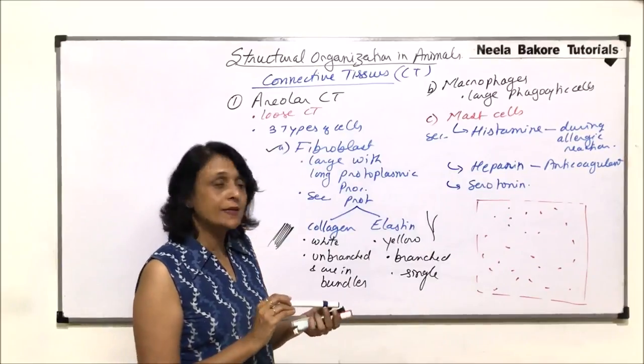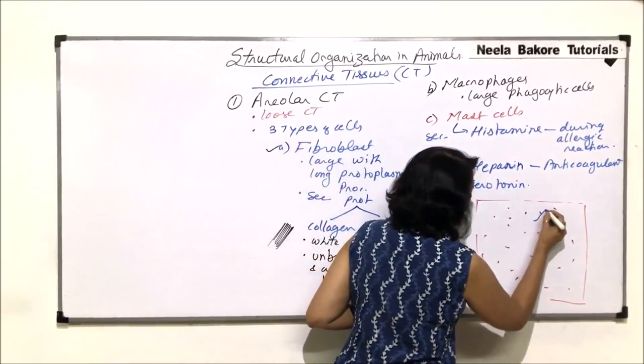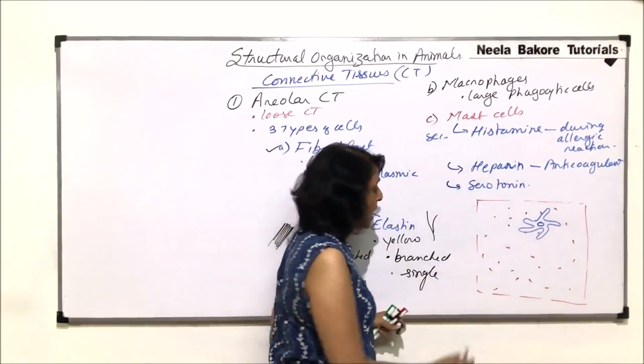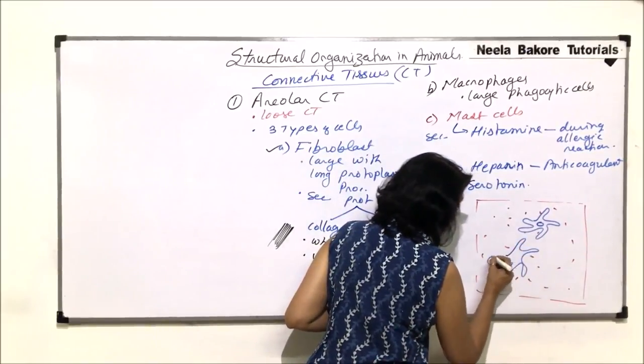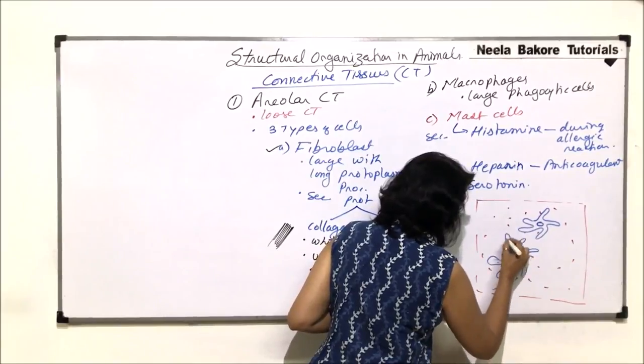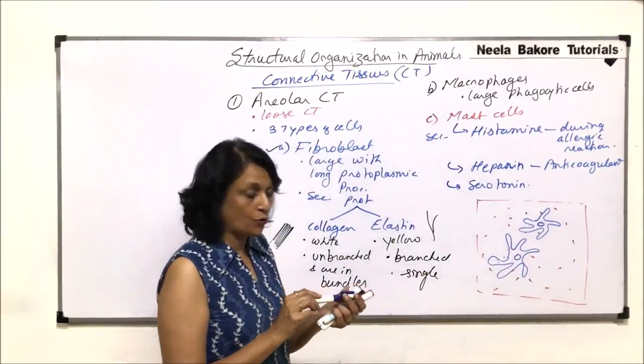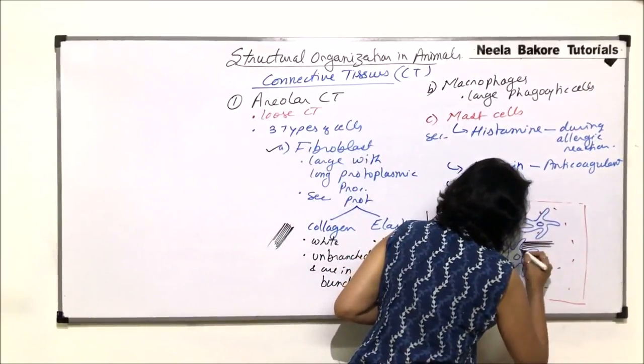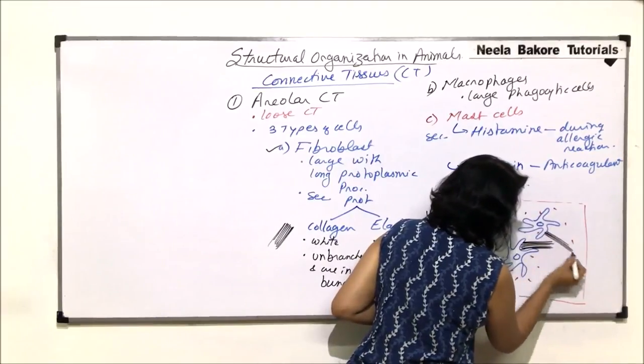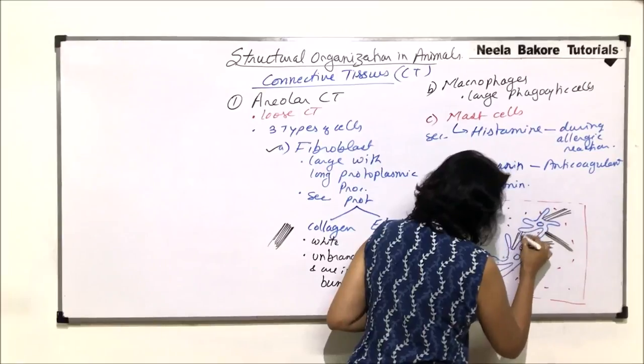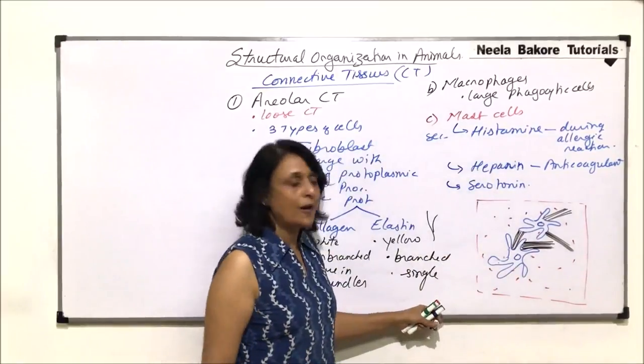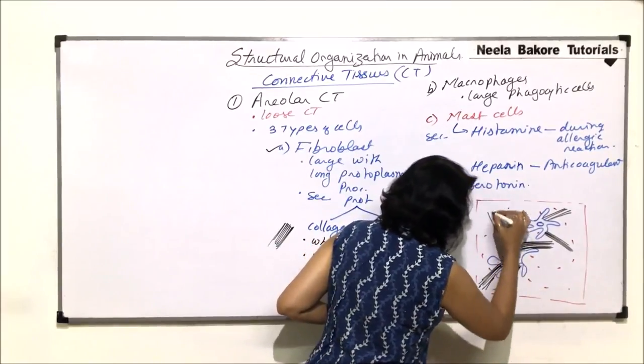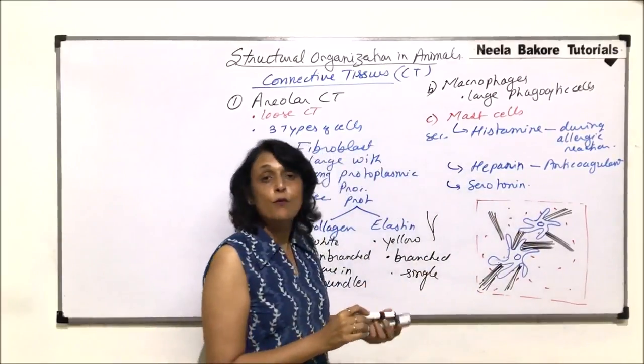This ground tissue is the matrix part, which is also secreted by the cells. Then there are these large fibroblasts with these big protoplasmic processes and a prominent nucleus. And invariably with these large cells only, we would find the fibers also associated. So let us draw collagen fibers secreted by these fibroblasts only. Collagen fibers arranged in bundles, normally found with the fibroblasts. We will draw a few more bundles.